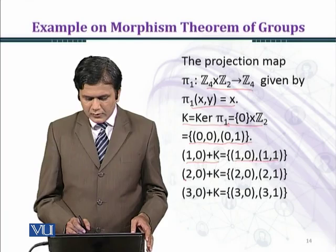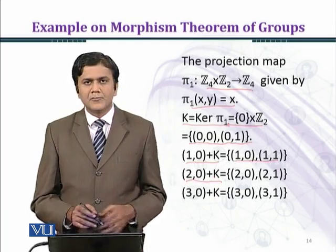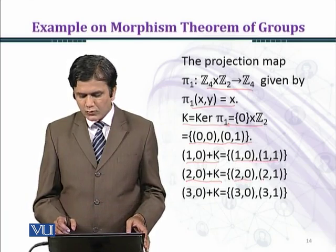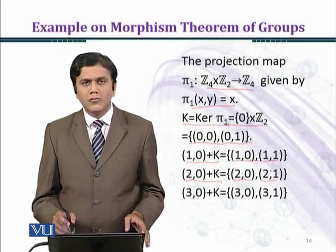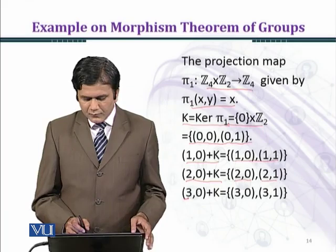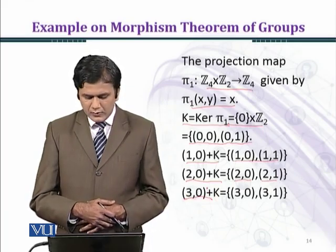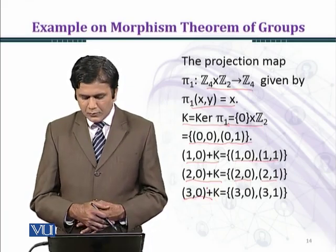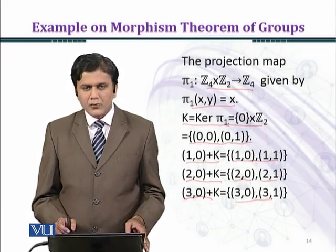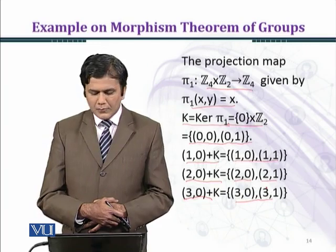In the third left coset, (2,0) + K, we obtain (2,0) and (2,1). And in the fourth left coset, (3,0) + K, we obtain (3,0) and (3,1).